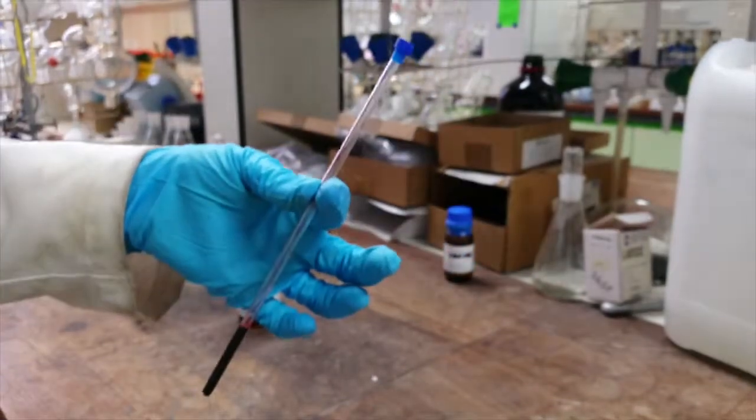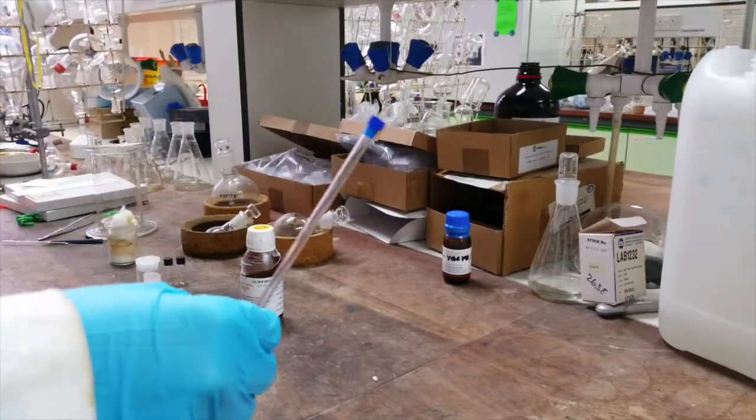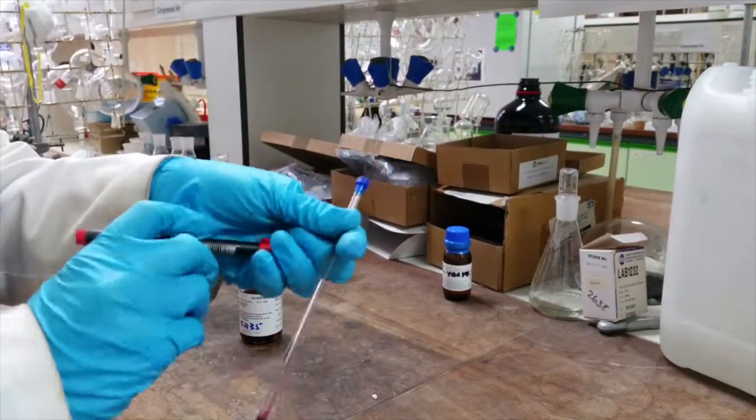Put the lid on the NMR tube and write your name and the sample code clearly at the top of the NMR tube.